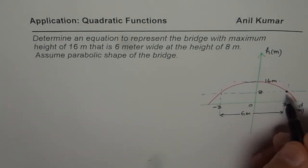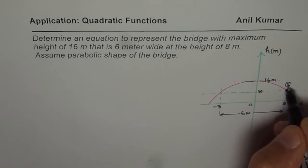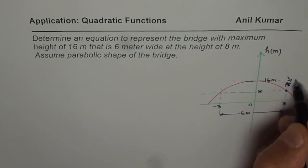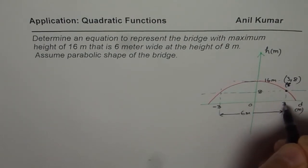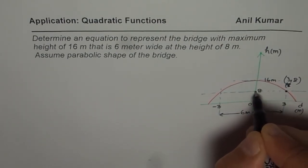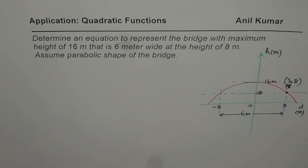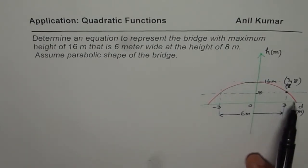So this coordinate point should be at 3, I am sorry. This should be at 3 and 8. So x value is 3, y value is 8. So that is how we know one coordinate on this parabolic bridge.